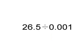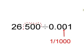The next sum is 26.5 divided by 0.001. 0.001 is really 1 over 1000. So you move the decimal place three places to the right. So the answer will be 26500.